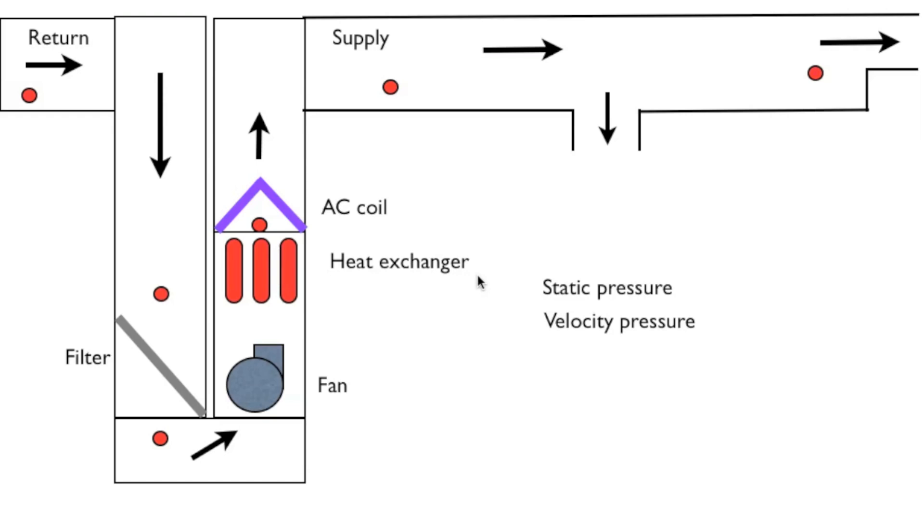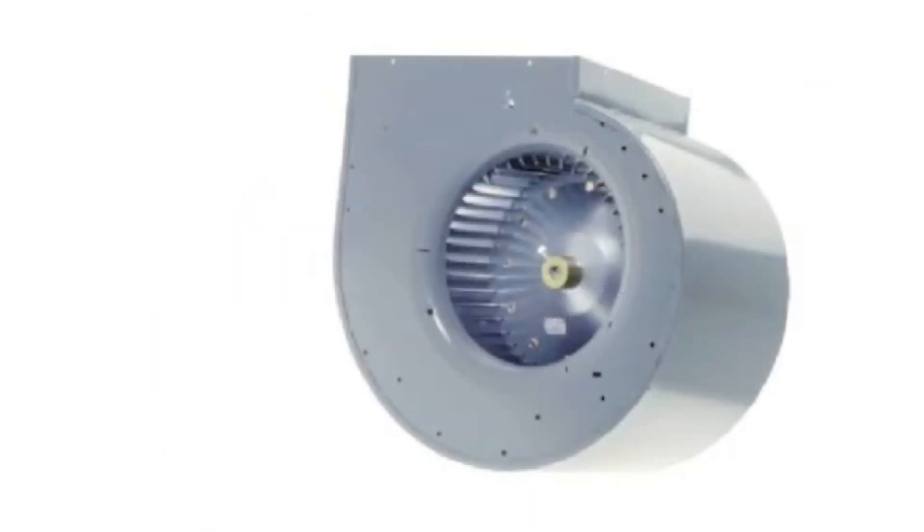The type of fan is important. We use what is called a squirrel cage blower. They usually look something like this. This is a direct drive blower - the motor's on the other side. The squirrel cage type blower is a static pressure blower.